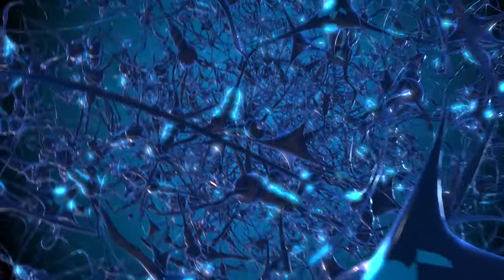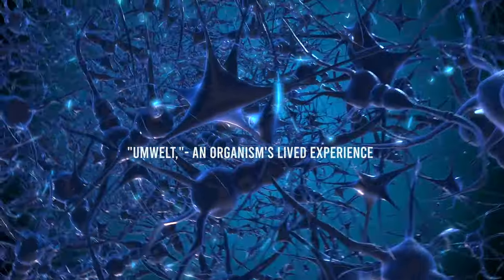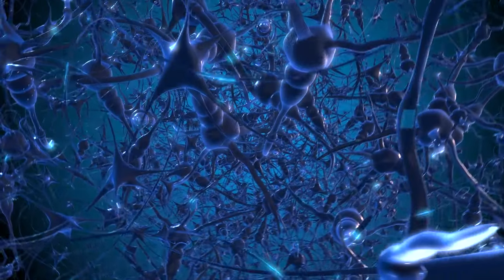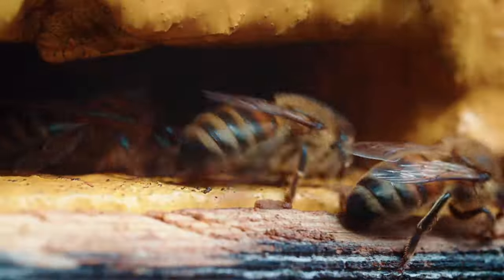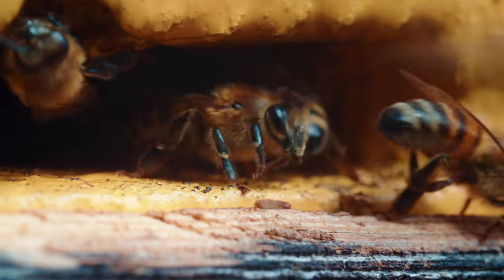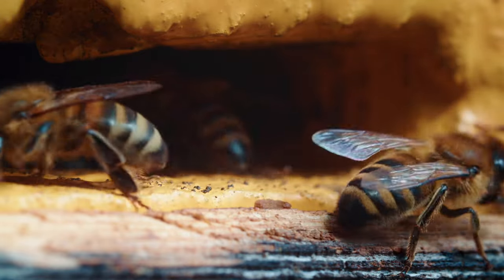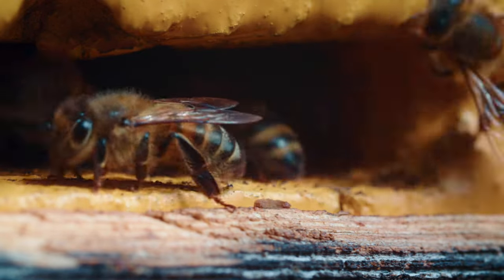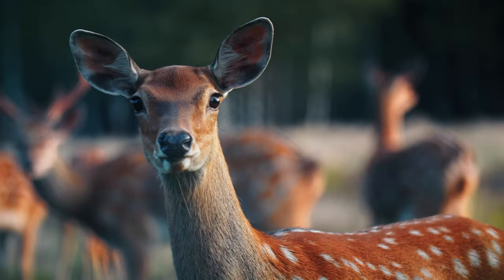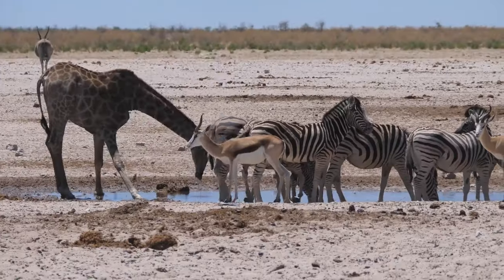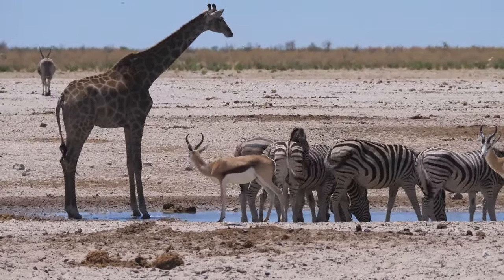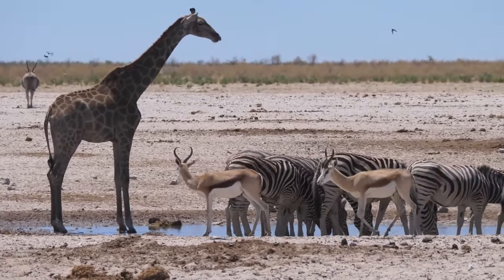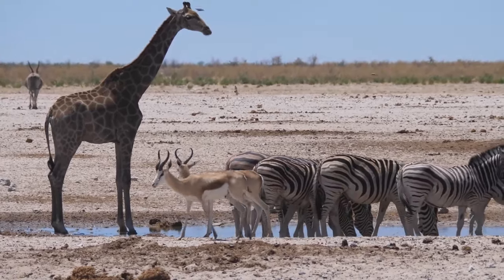One interesting concept that comes up is umwelt, which refers to an organism's lived experience. If we pay attention to an organism's umwelt, we wouldn't expect a honeybee to speak human language. However, we would be fascinated by their own special language, which involves vibrations and positions. They can detect things like polarized sunlight, which we can't even begin to understand. This is where science is headed now. Instead of asking if animals can speak like humans, we are asking if they can communicate complex information among themselves. We want to understand how they do it and what it means to them. This is a more biocentric approach, or at least less focused on ourselves.